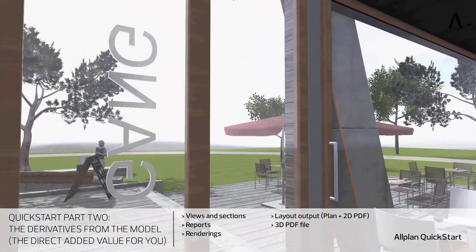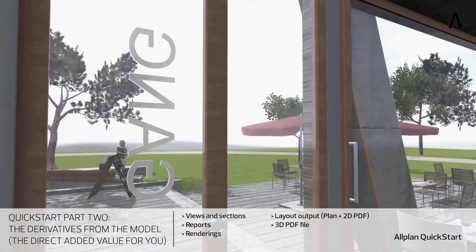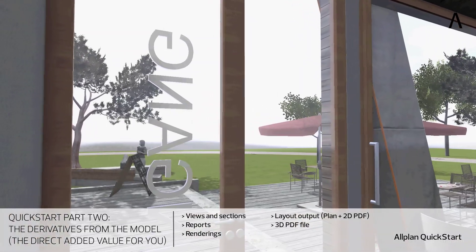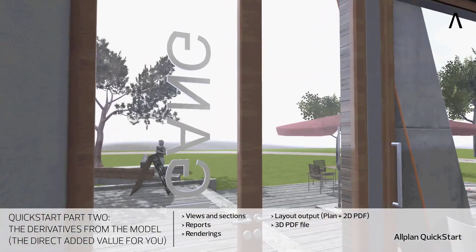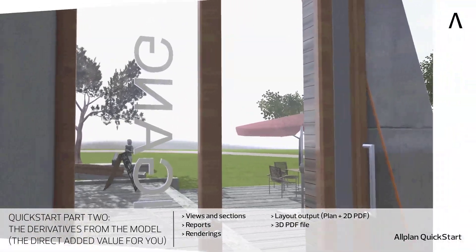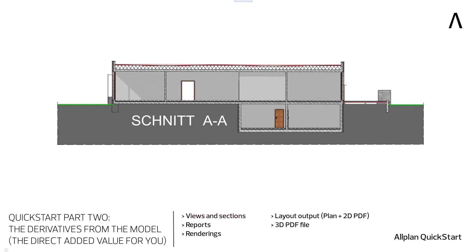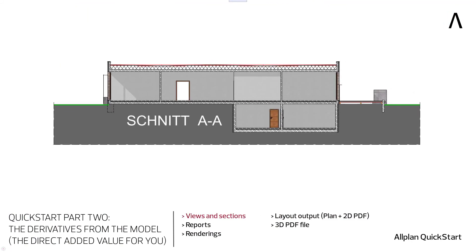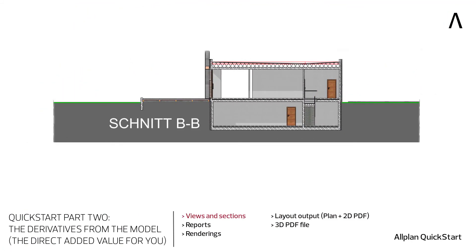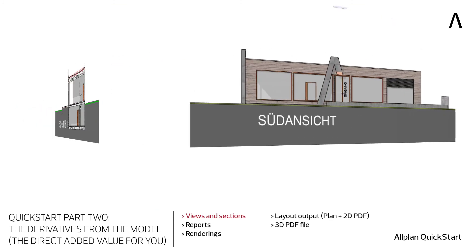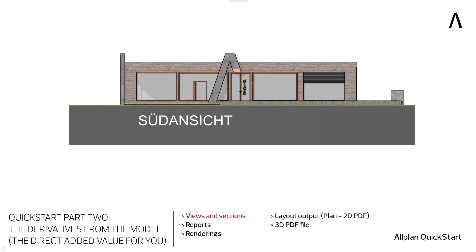What derived objects are there? In the Allplan Quickstart, we focus on the following derived objects: views and sections that Allplan automatically generates from the model data, and that you can generate with your very personal handwriting.